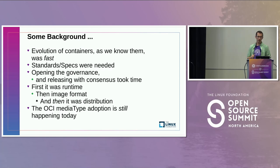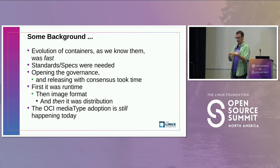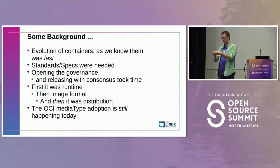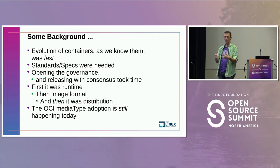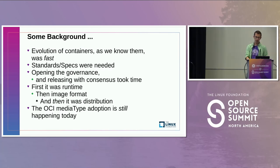A bit of background: the container ecosystem as we know it was very fast moving. There were a lot of things involved in the early days that rightfully wanted to keep a tight grip on how things were evolving — specifically at the Docker company. There were lots of companies and other contributors that wanted to be involved, and figuring out how to have an open governance conversation around that took time — while the containers, APIs, and formats were quickly evolving, going through several pretty drastic iterations.